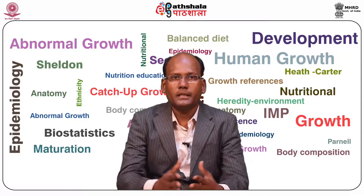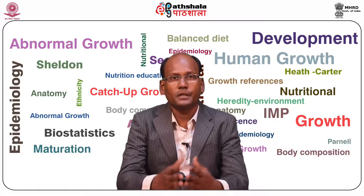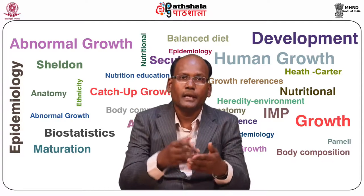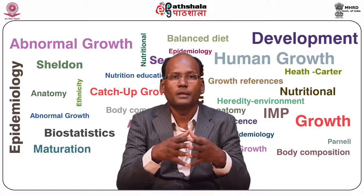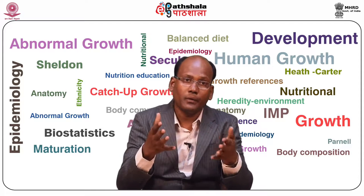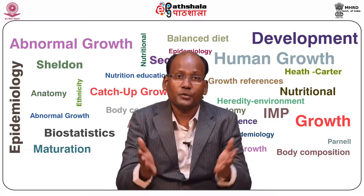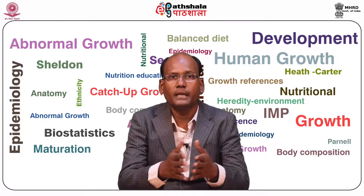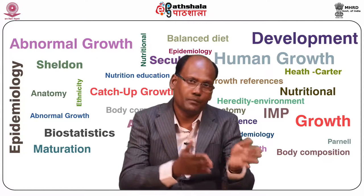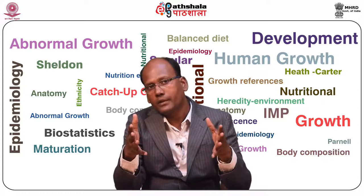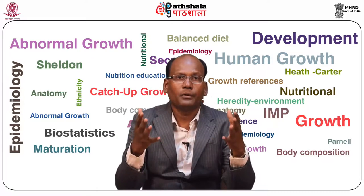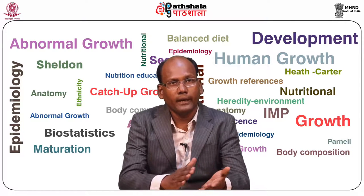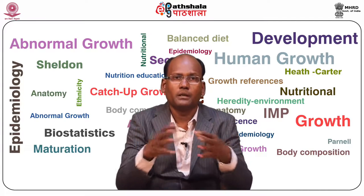Tetanus is a comparatively rare disease caused by the bacterium Clostridium tetani. The bacteria generally enter through a break in the skin such as a cut or puncture wound by a contaminated object. The bacteria are commonly found in soil, dust and manure. It is also known as lockjaw, characterized by muscle spasms. In the most common type, spasms begin in the jaw and then progress to the rest of the body, usually lasting a few minutes and occurring frequently for 3 to 4 weeks. Other symptoms may include fever, headache, trouble swallowing, high blood pressure and a fast heart rate. About 10% of those infected die.